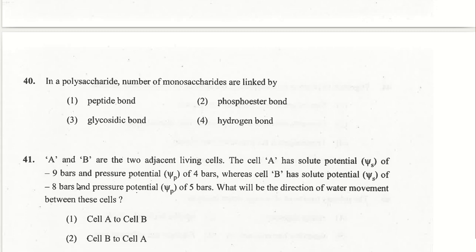Cell A has solute potential of −9 bars and pressure potential of 4 bars, giving a water potential of −5 bars. Cell B has solute potential of −8 bars and pressure potential of 5 bars, giving a water potential of −3 bars. Water moves from cell B to cell A because water potential is higher in cell B. The second option is the answer for question 41.